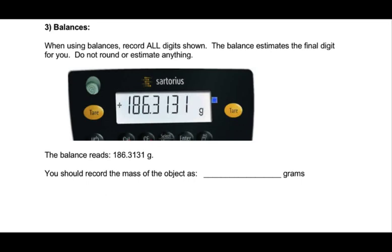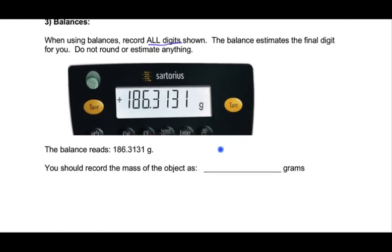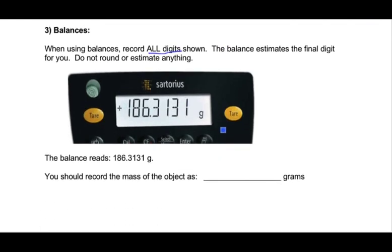The balances we have in the laboratory are all digital, meaning they're not analog. These graduated cylinders are like an analog system where you're estimating the next digit down. With a digital balance, the numbers are just spelled out for you, and these things are calibrated so that the last digit is still the estimated digit.